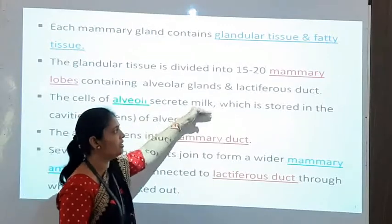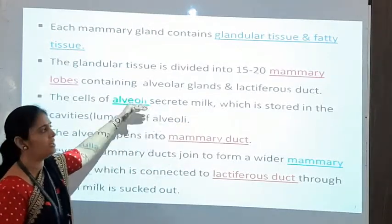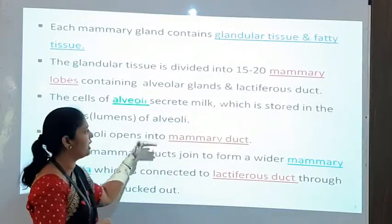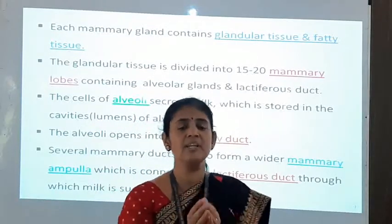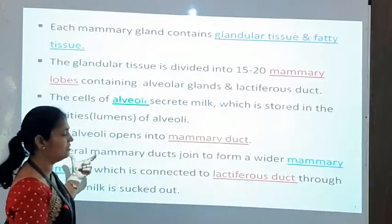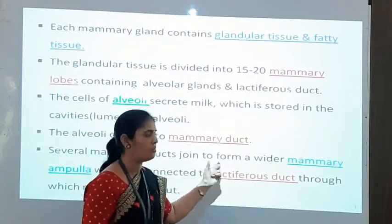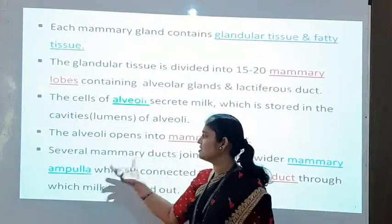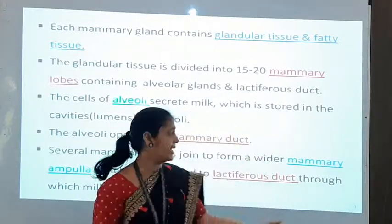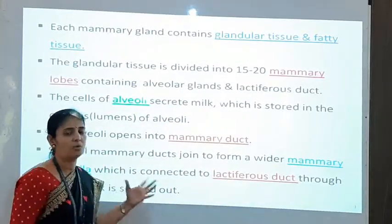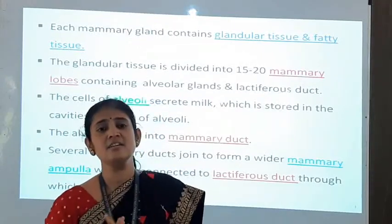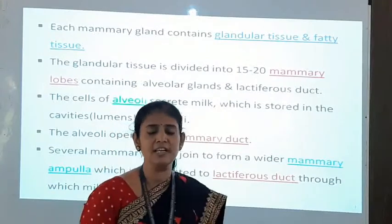The cells of alveolar glands secrete milk, which is stored in the cavities of the alveolar gland. The milk is then transferred into the mammary ducts. A number of mammary ducts join together to form a wider mammary ampulla, which is connected to the lactiferous duct through which milk is sucked out by the baby. These are the different structures related to the breast.